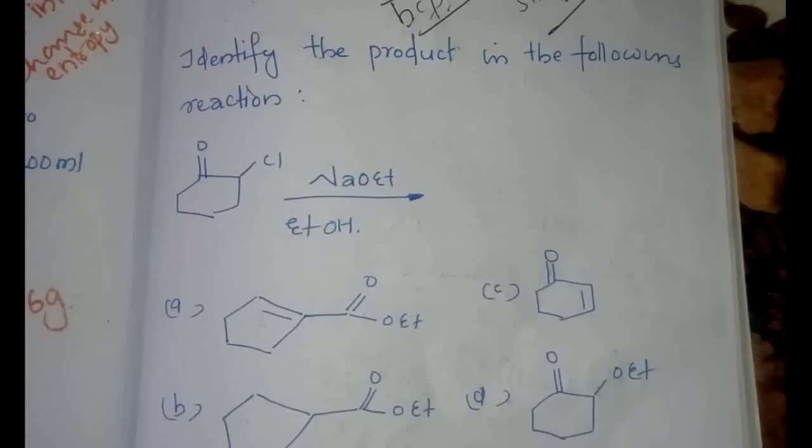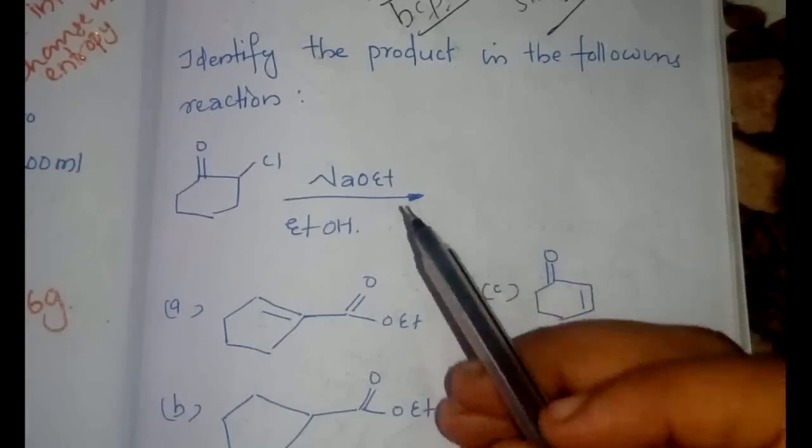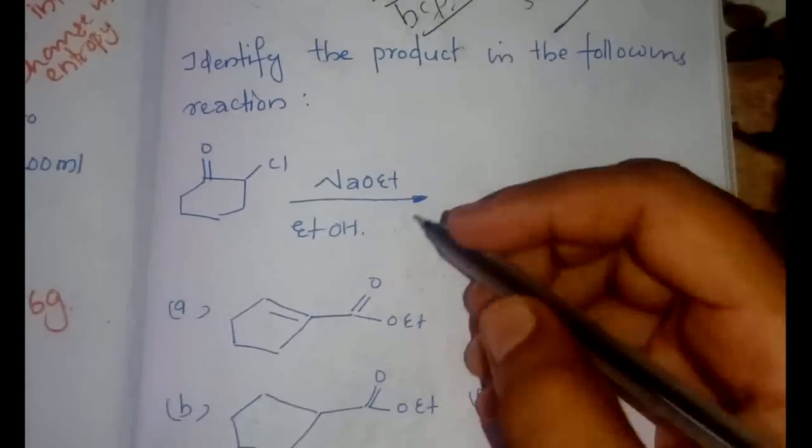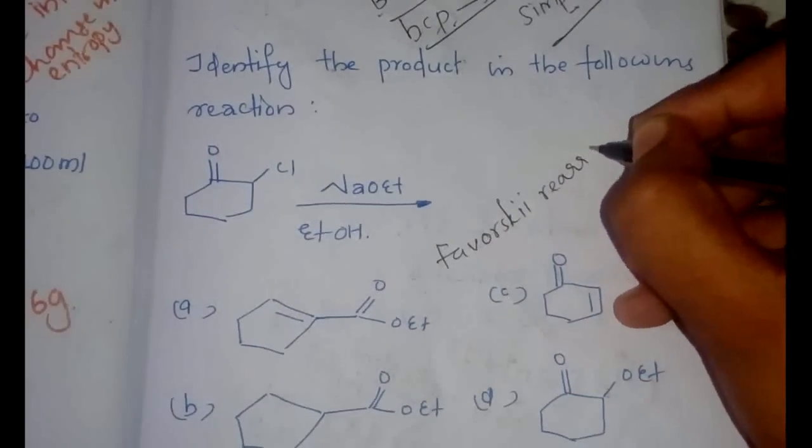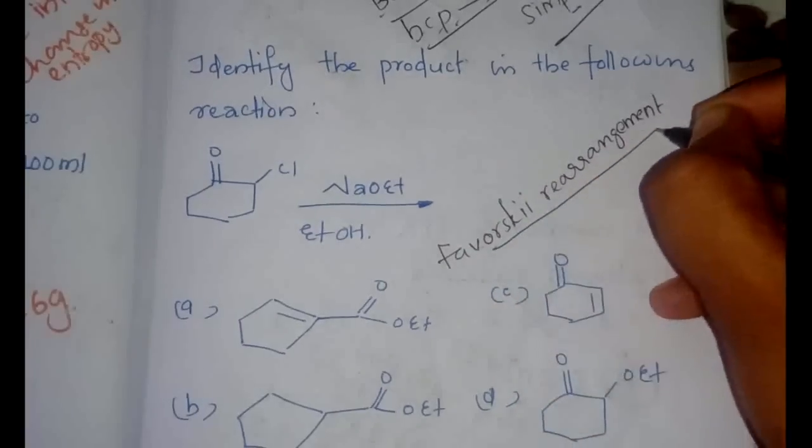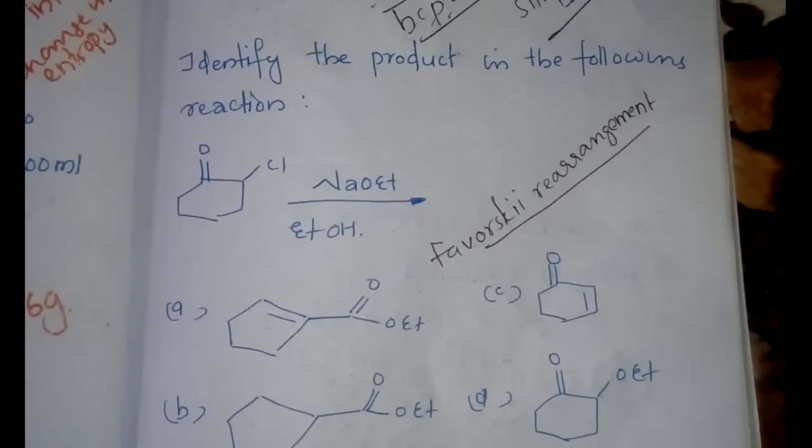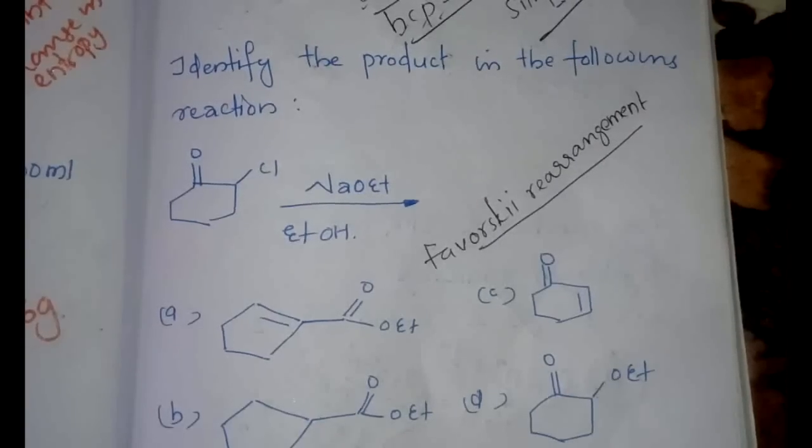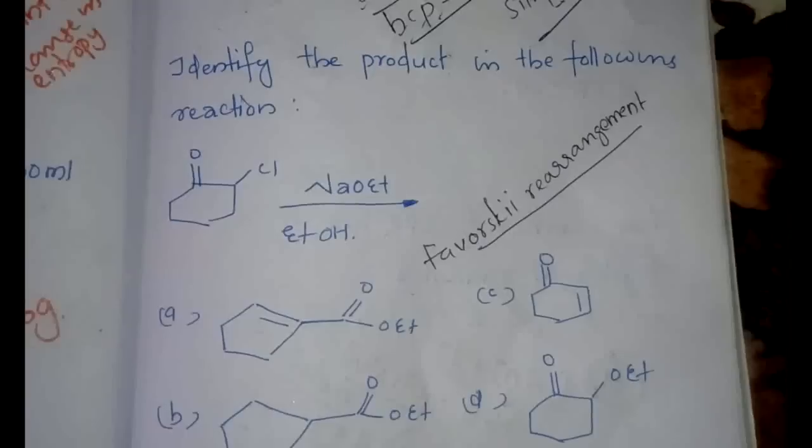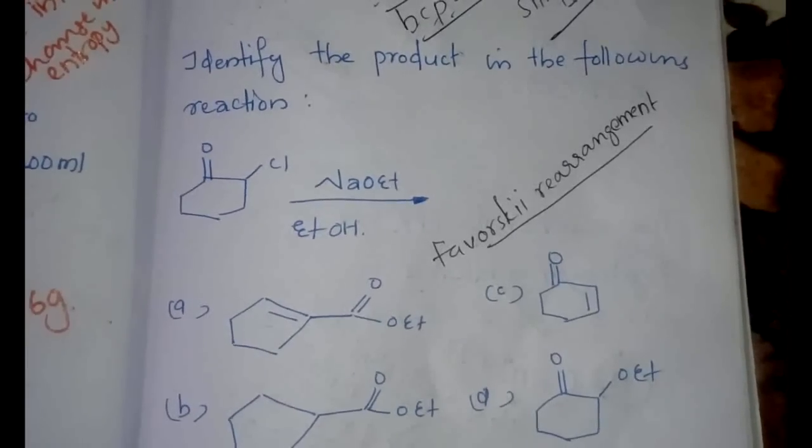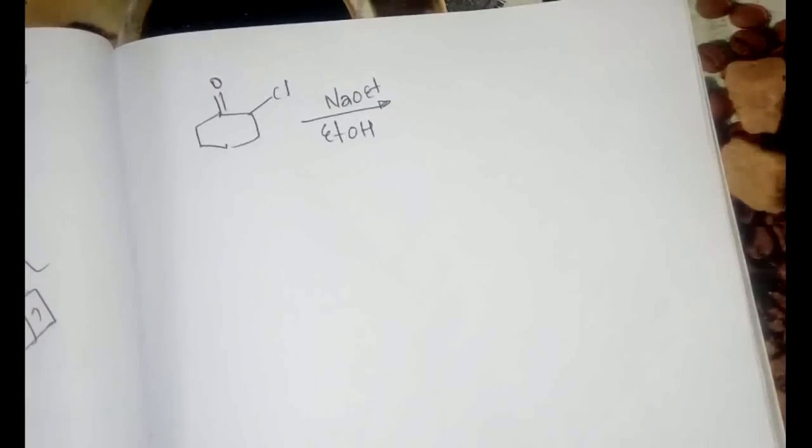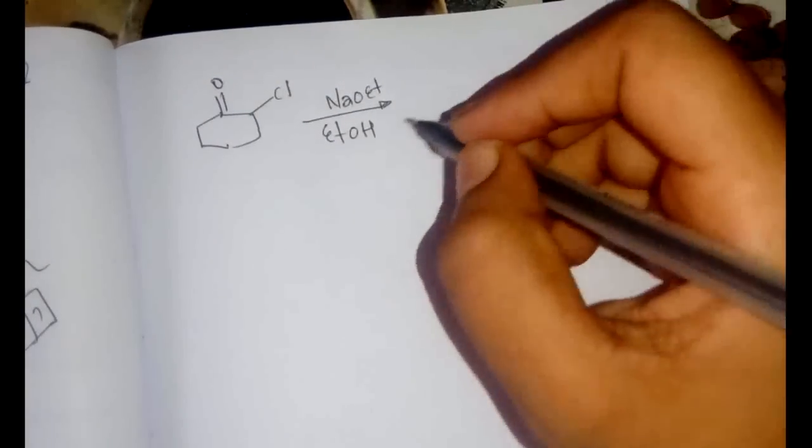The final question that we are going to discuss today is an organic rearrangement reaction, identify the product in the following reaction. This particular rearrangement is known as Favorskii rearrangement. It is very simple. I will be discussing the mechanism now. It is very simple to follow and most of the time this question from Favorskii rearrangement will be asked because this is easy and also simple to learn but still you can get confused in many ways.